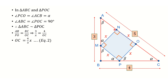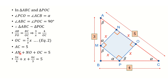Now I can express AC as: AC = AN + NO + OC = 3x/4 + x + 4x/3 = 5. Taking LCM of 12: (9x + 12x + 16x)/12 = 5, so 37x/12 = 5, giving x = 60/37. So the side length of the square is 60/37 units.